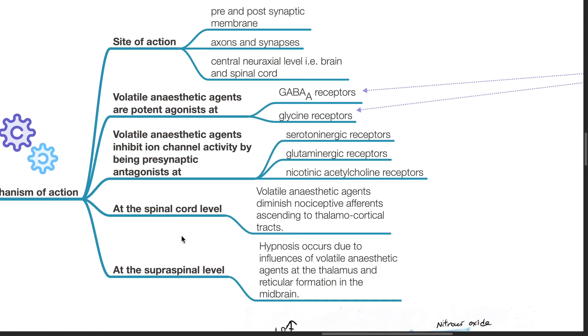At the spinal cord level, volatile anesthetic agents diminish nociceptive afference ascending to the thalamocortical tract. At the supraspinal level, hypnosis occurs due to the influences of volatile anesthetic agents at the thalamus and reticular formation in the midbrain.